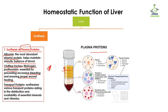The third type of plasma protein includes transport proteins. The liver also synthesizes various transport proteins, aiding in the distribution and availability of essential minerals and vitamins. As the name indicates, they transport something from one place to another, and these transport proteins are synthesized by the liver so that they can carry minerals and vitamins to wherever they are required.